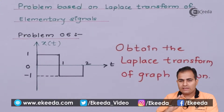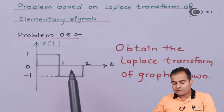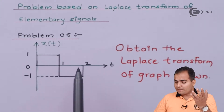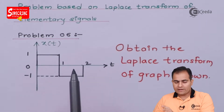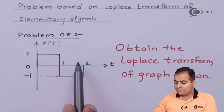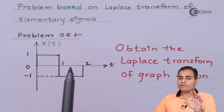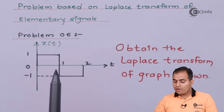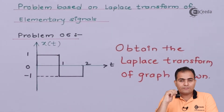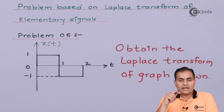In today's question the graph is a simple square wave available between 0 to 2. In the next videos, if the problem is based on a graph that is periodic and we want to find the Laplace transform of a periodic signal — meaning there is continuous oscillation — then you should know how to find the Laplace transform of the first wave, which is important. We will study this in upcoming videos on the Laplace transform of periodic signals.